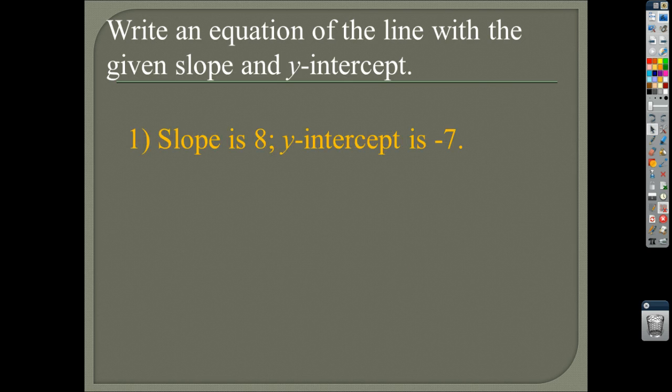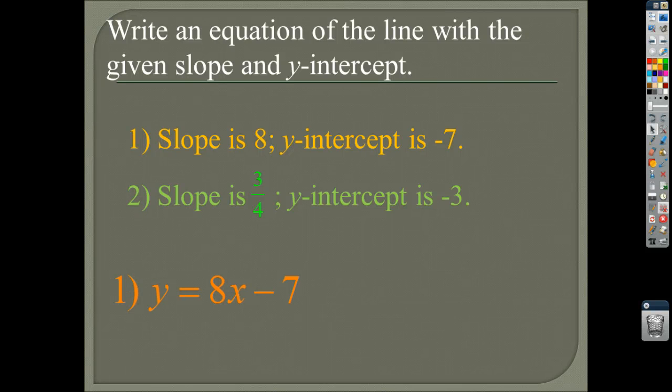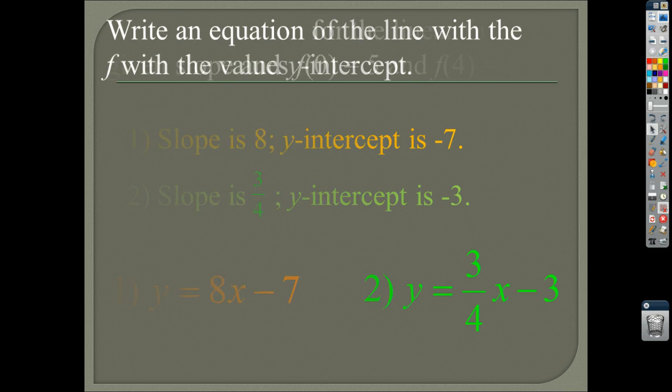So let's say I tell you the slope is 8 and the y-intercept is negative 7. You should be able to write an equation for that. And let's say I give you another one where the slope is 3 fourths and the y-intercept is negative 3. You should be able to write an equation for that. So go ahead and pause the video and you try to write an equation for both of those. So the first one, hopefully you had plugged in m is 8 and b is negative 7. So you get 8x minus 7. And the second one should have been 3 fourths x minus 3. Pretty basic, I think. I think you guys should be doing fantastic at this.